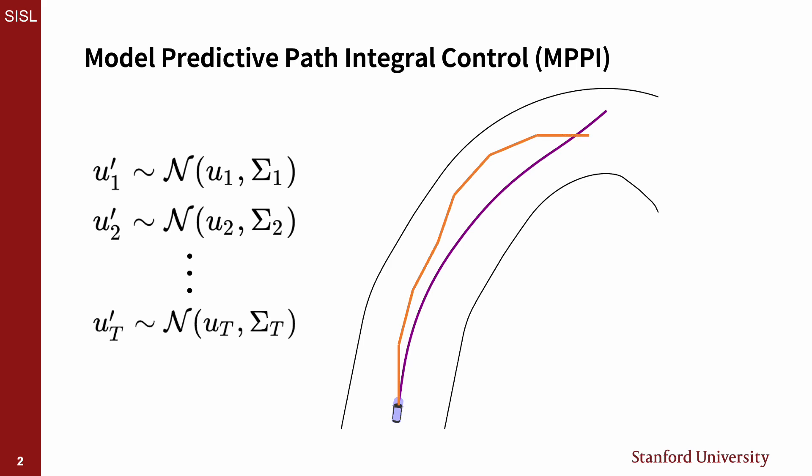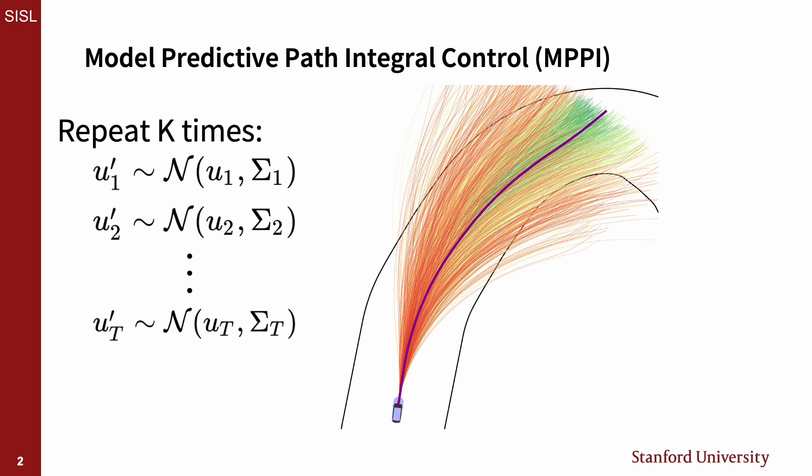We then repeat this whole process k times, where k is the number of samples for the algorithm, and then use the trajectory cost to calculate a cost-informed weighted average of the sampled controls.